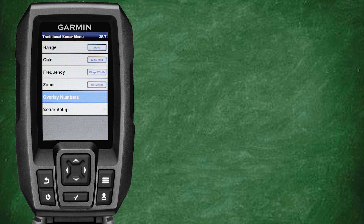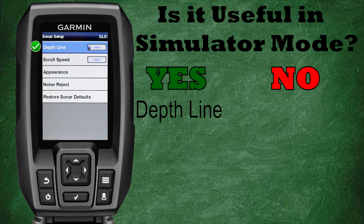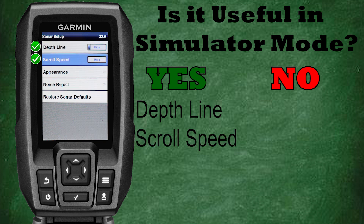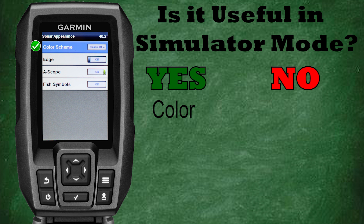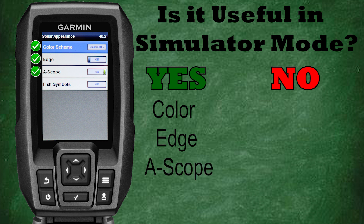Now let's select the sonar setup menu. Depth line: functions great in simulation mode — turn it on and off and see what you prefer. Scroll speed: fully adjustable in simulation mode, so give it a try and test out each scroll speed to see what you prefer. Color scheme: simulation mode gives you a great opportunity to go through all the various color schemes available on the Garmin Striker and see which color choice is your favorite. Edge feature: turn the edge feature on and learn how it works to help you interpret hard or soft bottoms where you're fishing. Ascope: works great in simulator mode and is extremely helpful in helping you learn how to interpret and understand your sonar better.